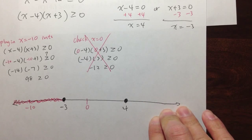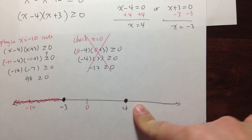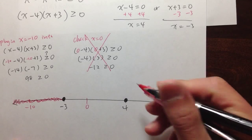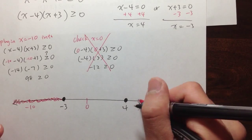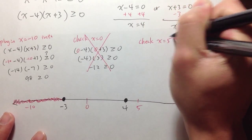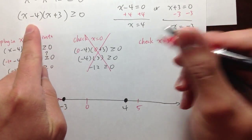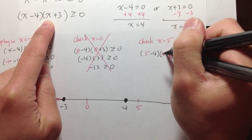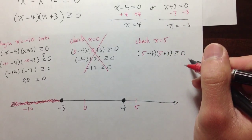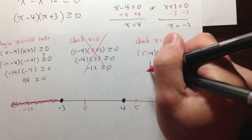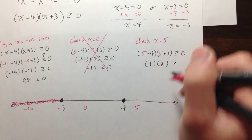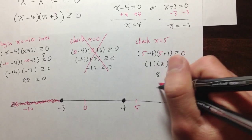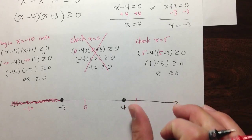For the last piece, I need a number bigger than 4 — I'll pick 5. Plug x equals 5 into x minus 4 times x plus 3. That gives 5 minus 4 equals 1, and 5 plus 3 equals 8. One times 8 is 8, and 8 is greater than or equal to 0. So this checks — it's true. That means I want to include this right interval in my solution.